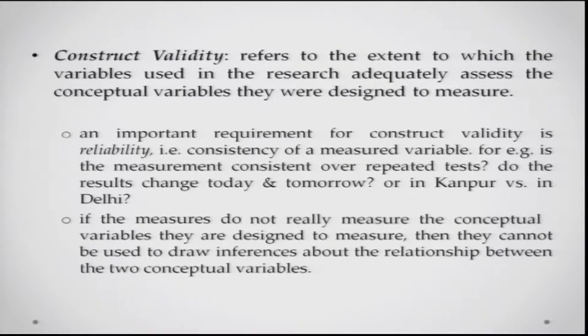Construct validity basically refers to the extent to which the variables used in research adequately access the conceptual variables they were designed to measure — for example, whether a thermometer is actually measuring temperature. An important requirement for a variable to have construct validity is reliability — whether the variable is consistently measured, whether the measures change in a matter of hours or in different conditions. If the measured variable does not really measure the conceptual variable it was designed to measure, you cannot draw inferences about the relationship of the variables in question.